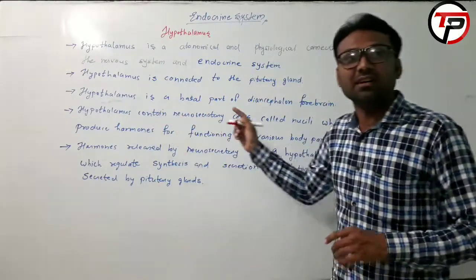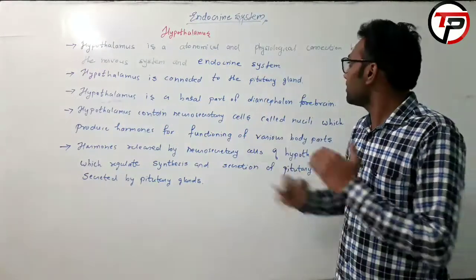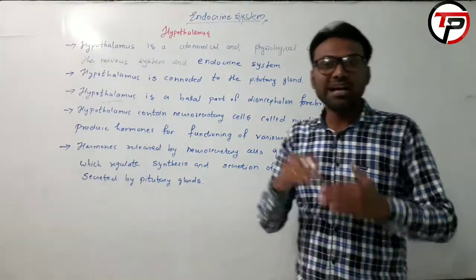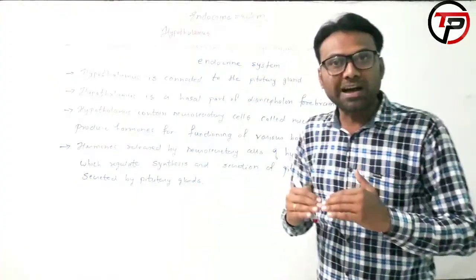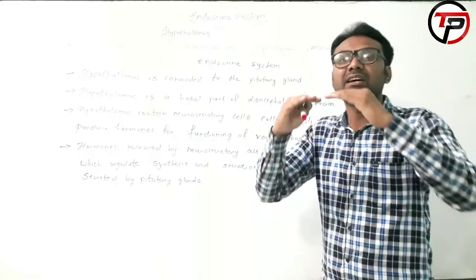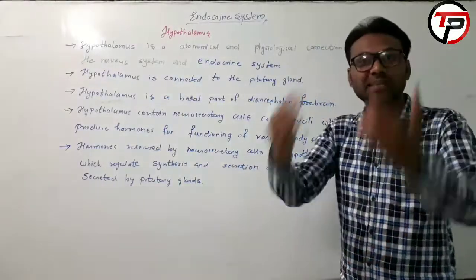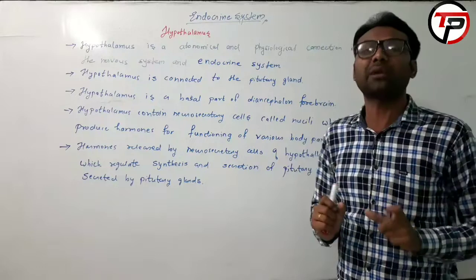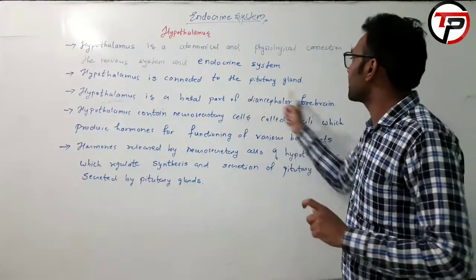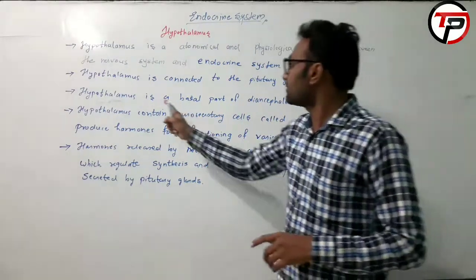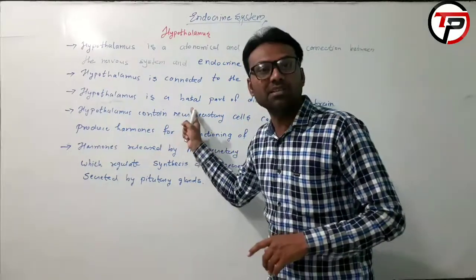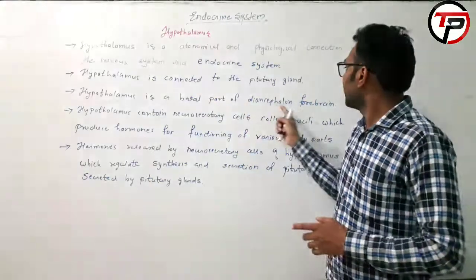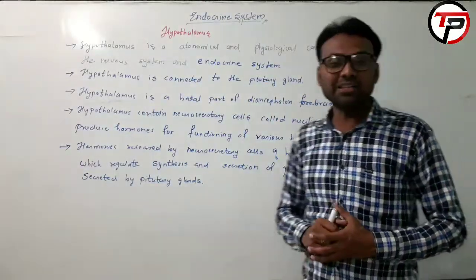Hypothalamus is the basal part of the diencephalon, which is part of the forebrain. So hypothalamus is located as the basal part of the forebrain — that is the diencephalon forebrain.